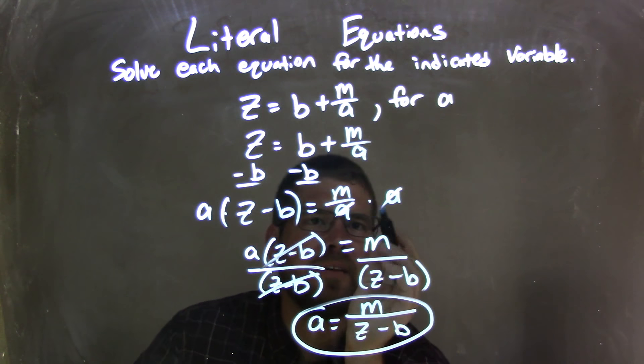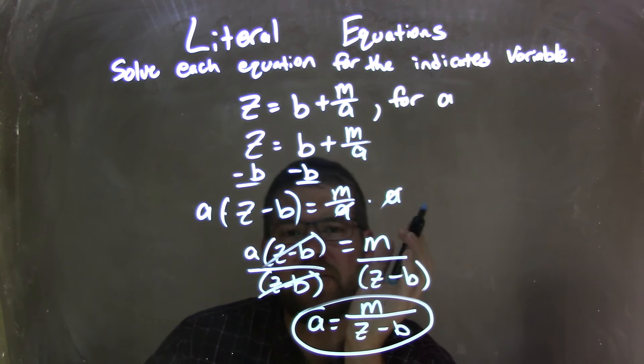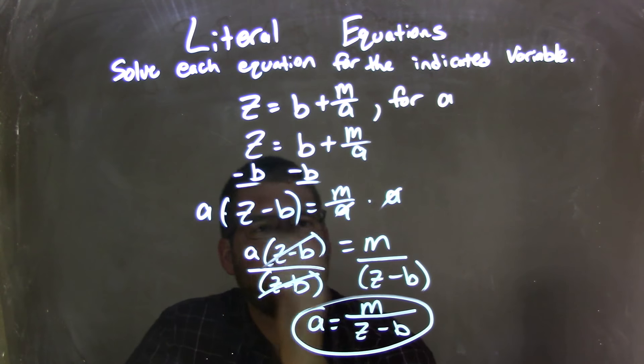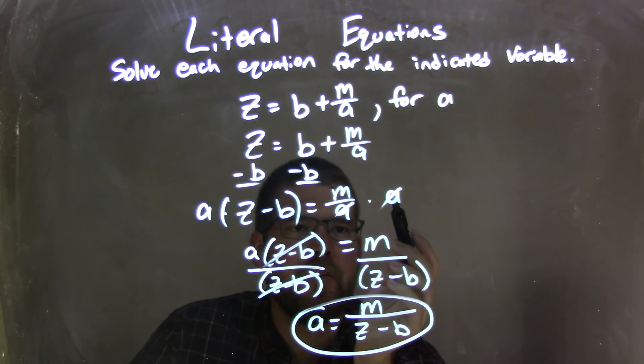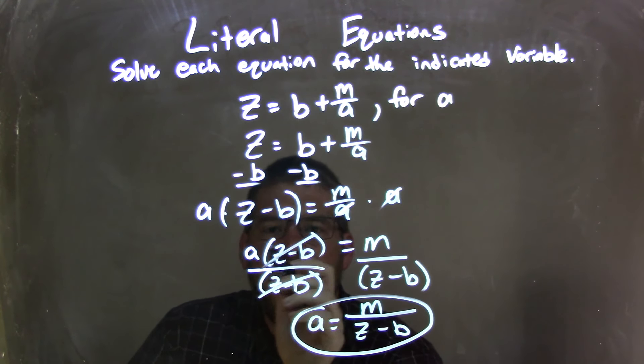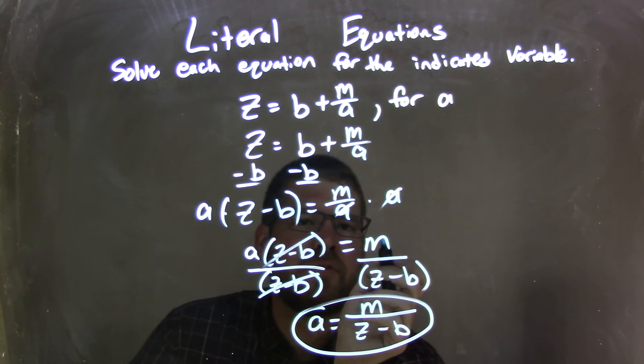I decided to, instead of only focusing on a by itself, sometimes I have to bring it over to the other side, get it out of the denominator. So I multiplied both sides by a, leaving a times z minus b on the left equals just m on the right.